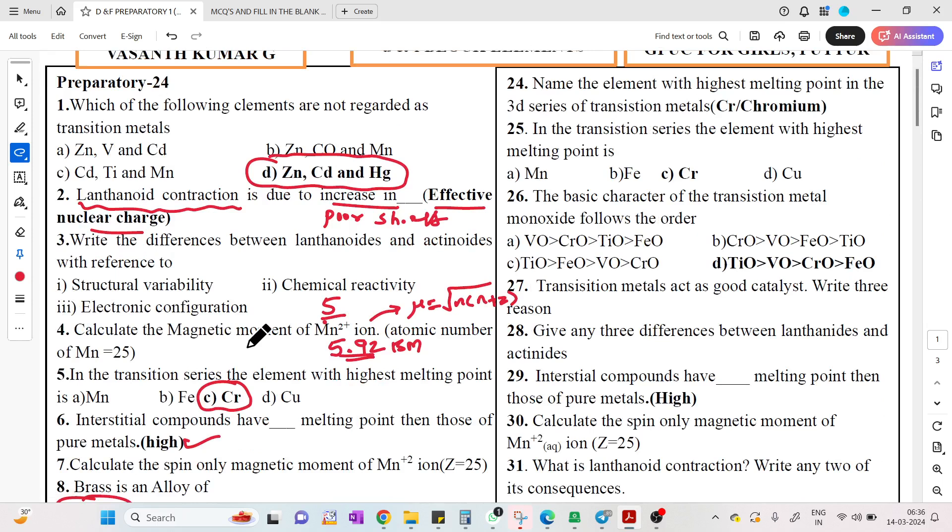Multiple choice questions: In transition series, the element with highest melting point - same question repeated. Basic character of transition metal monoxide follows the order: along the period it decreases, so Ti-V-Cr-Fe-O is the answer.